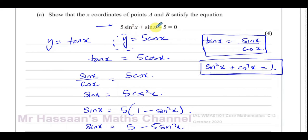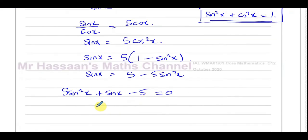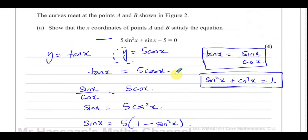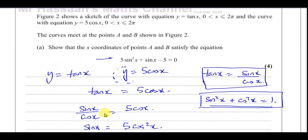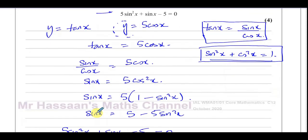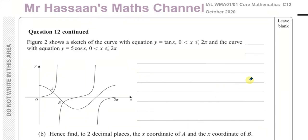So we've managed to show that 5 sin²x + sin x − 5 = 0 using those two identities — really important identities we must know. That's part A done.